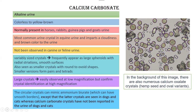As far as shape and size are concerned, calcium carbonate crystals are variably sized. They frequently appear as large spheroids — meaning circles — with radial striations and smooth surfaces. As you can see in the images, these crystals have lines (striations) on them along with smooth surfaces. They also appear as smaller crystals with round to ovoid shapes.